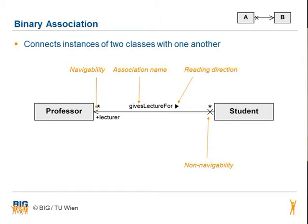The plus in front of 'lecturer' indicates the visibility of the role lecturer. The star at the beginning and the end of the link defines the multiplicity of how many classes can relate. The star means that there can be no relationship, one relationship, or more relationships.